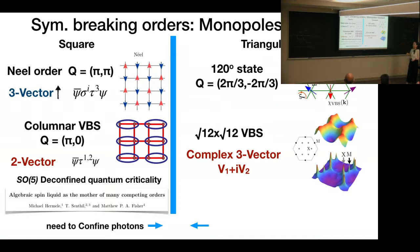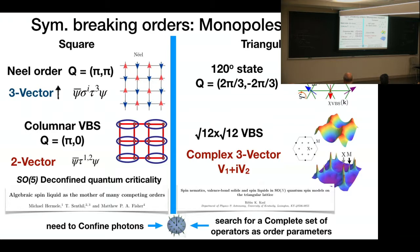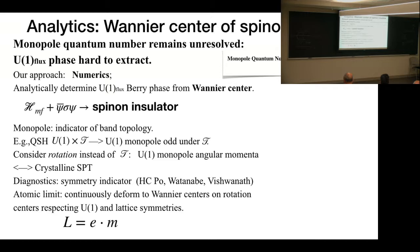And similarly, for the 12-site VBS phase, we also need a complex three-vector, which means that the fermion bilinear framework does not suffice to characterize these two symmetry-breaking orders. So we need to search for a more complete set of operators that characterize the symmetry-breaking orders. So all these two cases require the role of the monopole.